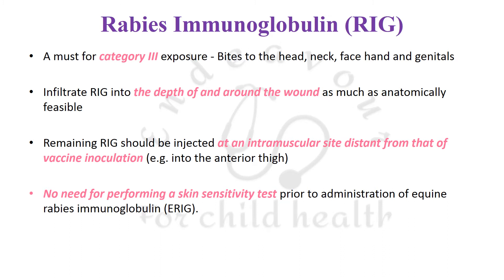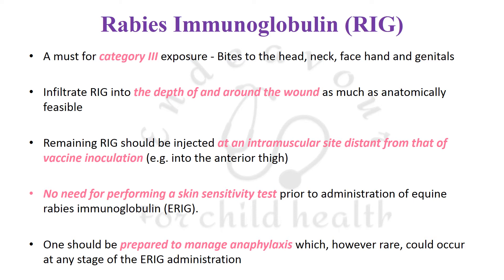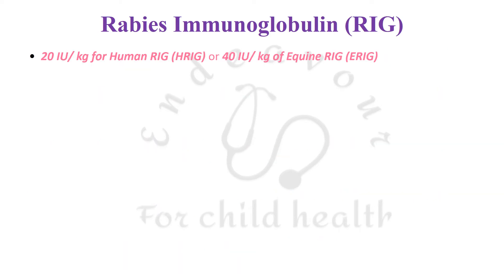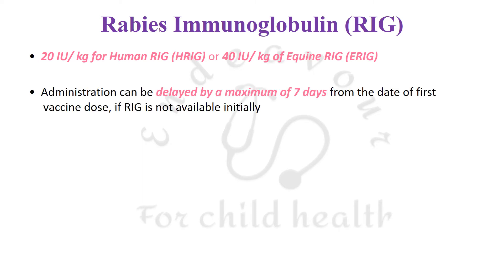These are minor points often overlooked in daily practice. There is no need to perform a skin sensitivity test before administering equine rabies immunoglobulin, but one should be prepared to manage anaphylaxis, which can occur despite all precautions. The dose is 20 international units per kg for human rabies immunoglobulin or 40 international units per kg for equine rabies immunoglobulin, whichever is available. RIG should not be delayed and can be given up to a maximum of seven days from the date of the first vaccine dose — day zero — so up to day seven.